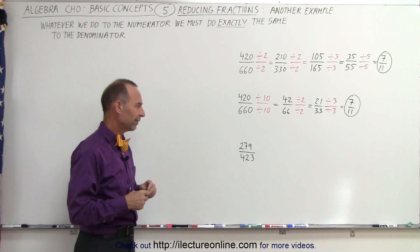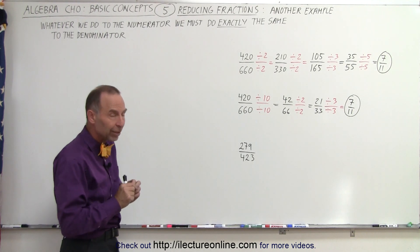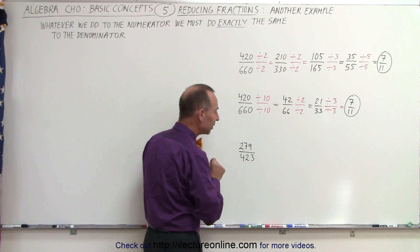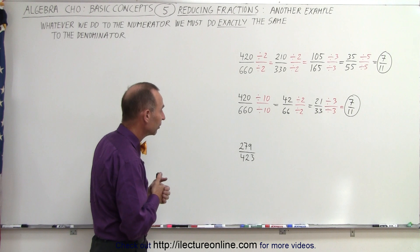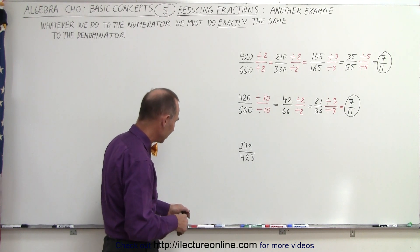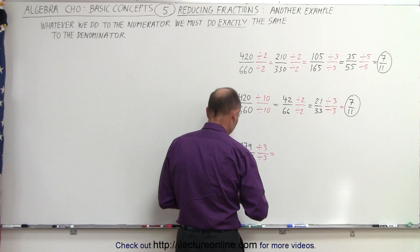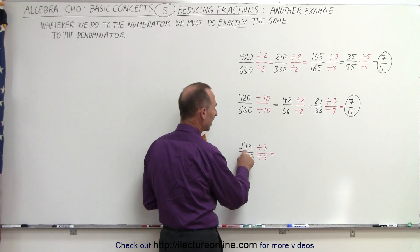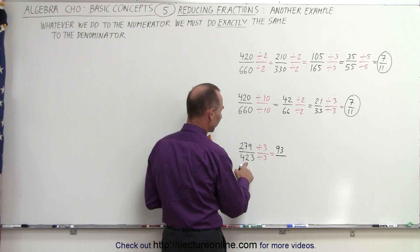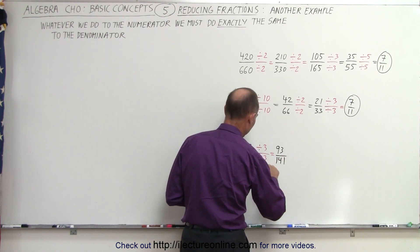Now for the next fraction: 279 divided by 423. They are not even, so we cannot divide by 2, but maybe we can divide by 3. Adding up the digits: 2 plus 7 plus 9 is 18, and 1 plus 8 is 9, so the numerator is definitely divisible by 3. For the denominator: 4 plus 2 plus 3 is 9, which is also divisible by 3. So we divide both by 3: 279 divided by 3 is 93, and 423 divided by 3 is 141.